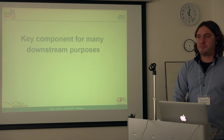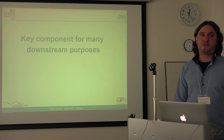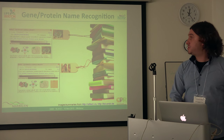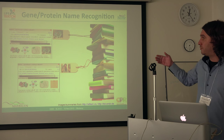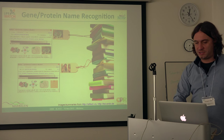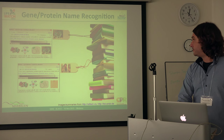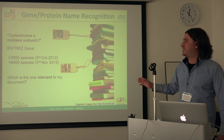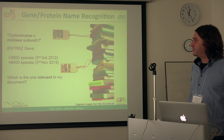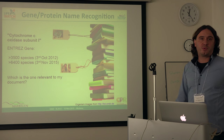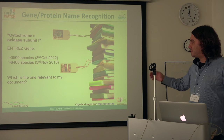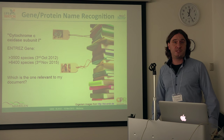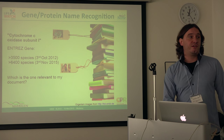Knowing the species mentioned in text is a key component for many downstream purposes. First of all, in a biomedical context, for gene and protein name recognition — so you want to know if your protein is the human or the rat homologue. For example, for Cox1, the gene for Cytochrome C Oxidase Unit 1, in October 2012 I was getting sequences related to more than 3,500 species, and now it's over 6,400 species.